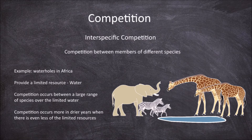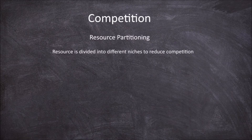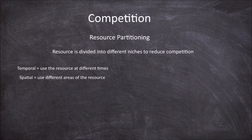Something that is often observed in areas where species share a limited resource is resource partitioning. Resource partitioning is where the resource is divided into different niches to reduce competition over the resource. This phenomenon is also referred to as niche differentiation. Resource partitioning can be temporal, meaning species use the resource at different times, or it could be spatial, meaning they use different areas to access the resource within the habitat.